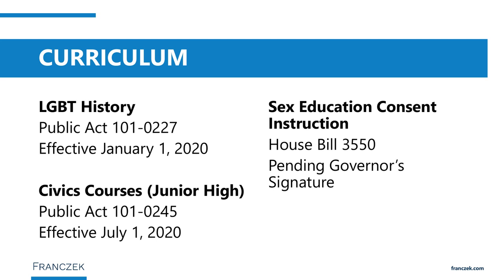Additionally, these textbooks must include information about the roles and contributions of all people protected under the Illinois Human Rights Act, ensuring curriculum is expanded to include a diverse array of people. The law also requires that history courses include a study of the roles and contributions of lesbian, gay, bisexual, and transgender people in the history of the country and the state.